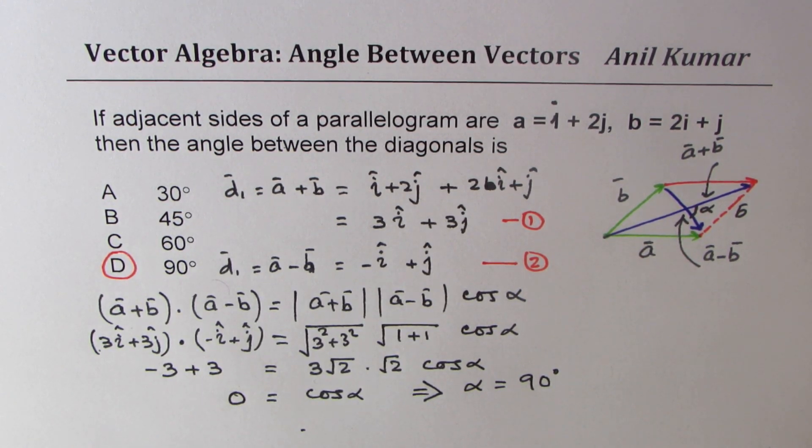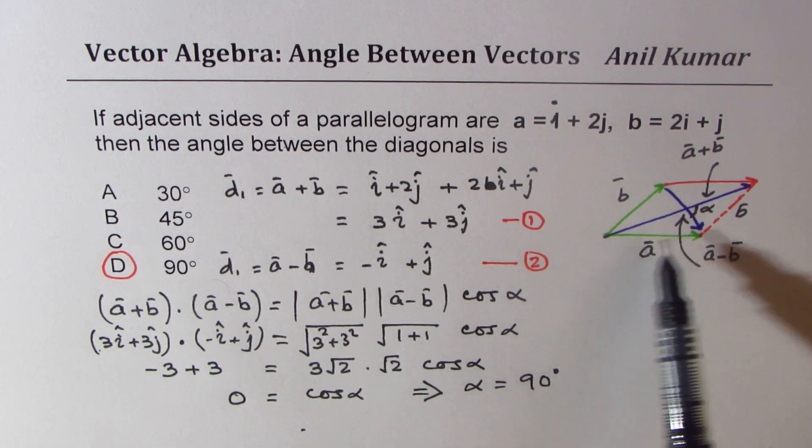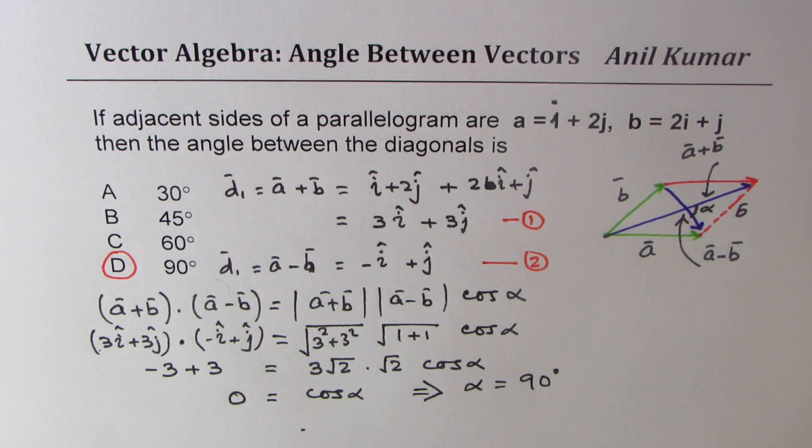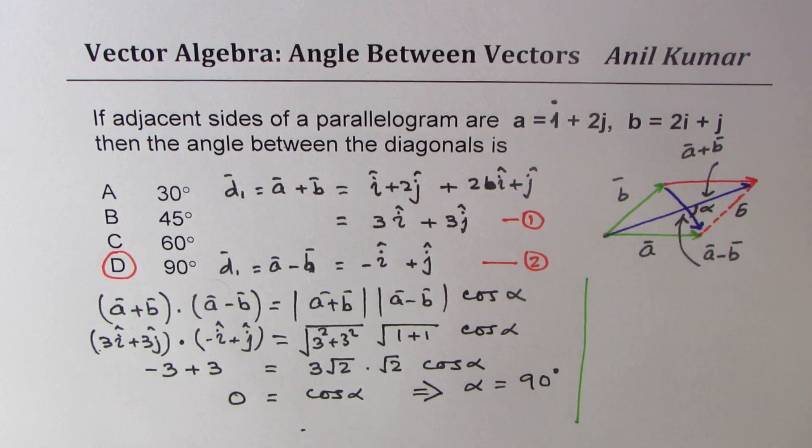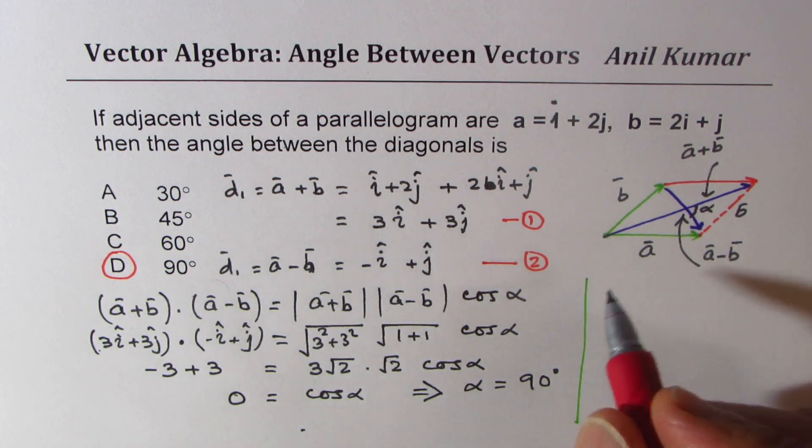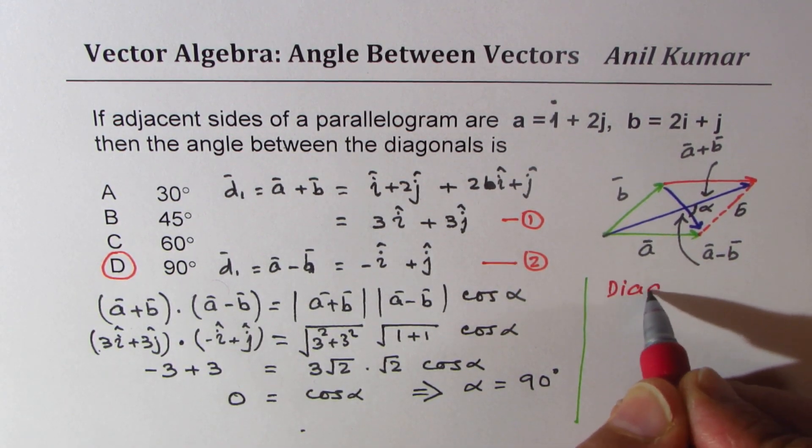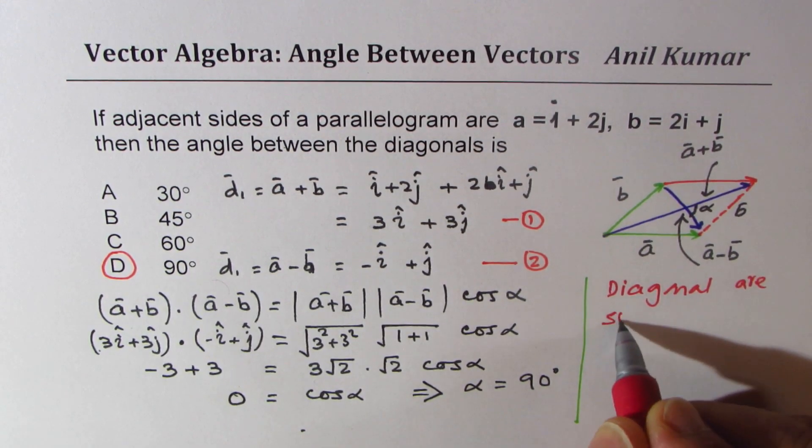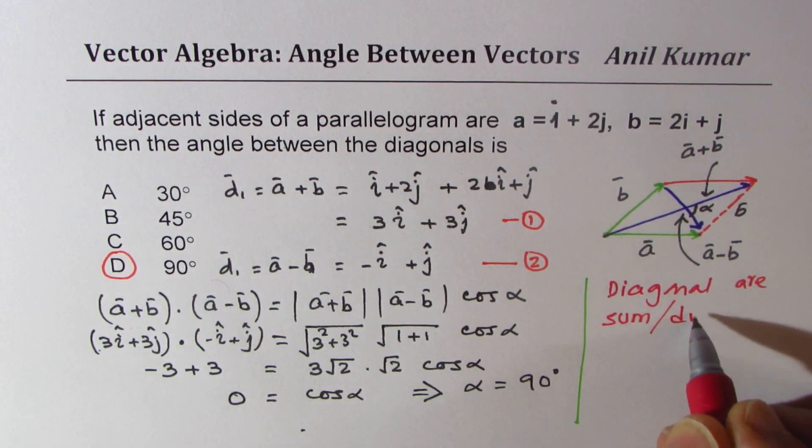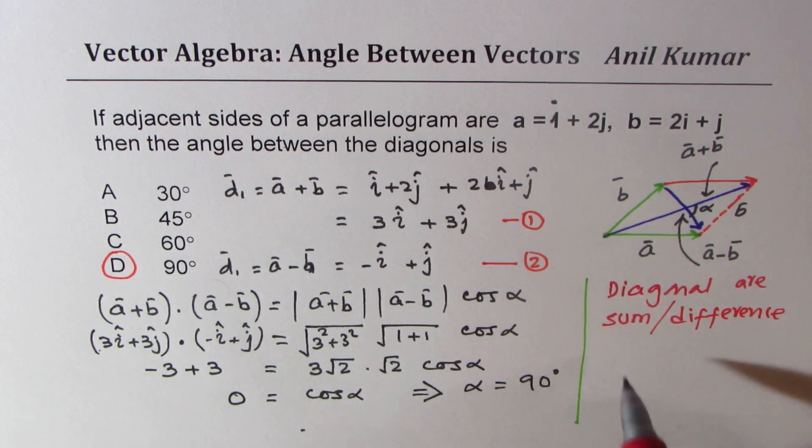So that is how you can solve such a question. Key here is to understand that the diagonals could be represented as sum and difference of vectors. So this is important to understand. Remember, diagonals are sum and difference of adjacent vectors in a parallelogram.